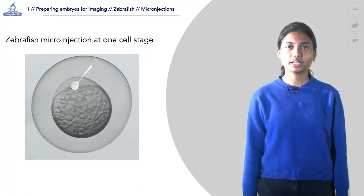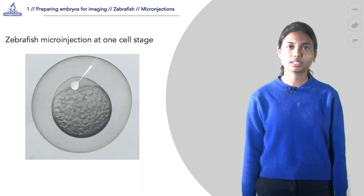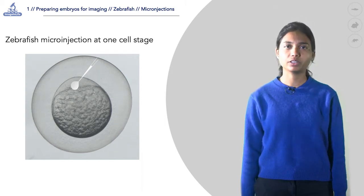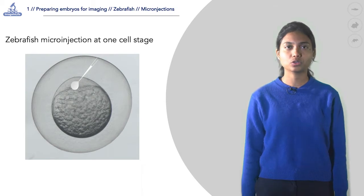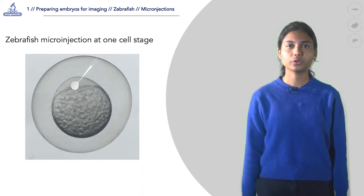Microinjection is a widely used technique to introduce macromolecules such as DNA, RNA, morpholinos, proteins, dyes, or even drugs into a selected cell at a chosen stage of an embryo during early development.